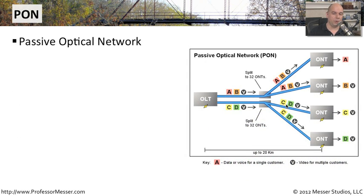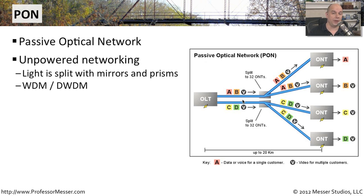PON stands for Passive Optical Networking. A Passive Optical Network is one where you have a single provider sending to many different receivers, all potentially receiving different kinds of traffic, through one method using Passive Optical Networking. It's an unpowered way of sending signal from one side of the network down to a single client. You're splitting the light in something called an ONT, and that light splitting goes out to all the different connections it needs to reach. It uses WDM or DWDM to send multiple frequencies through those connections and split them as they go out to the end user.